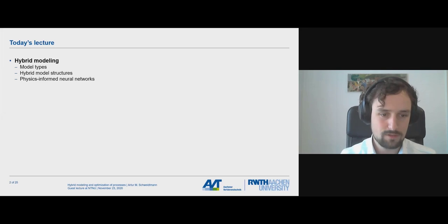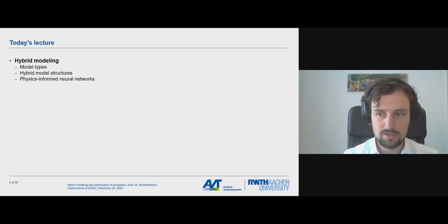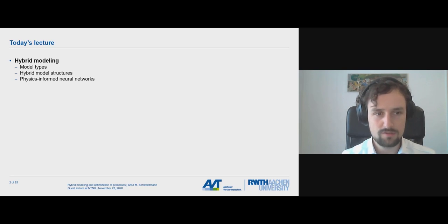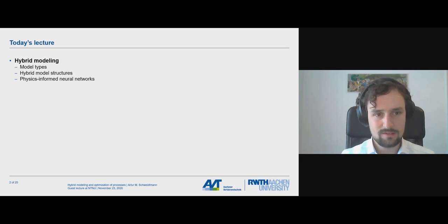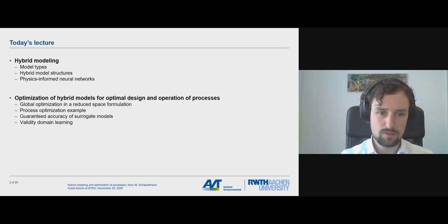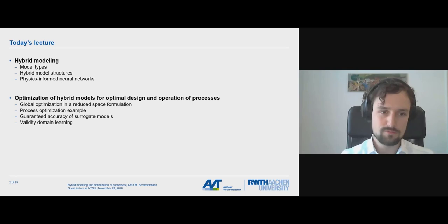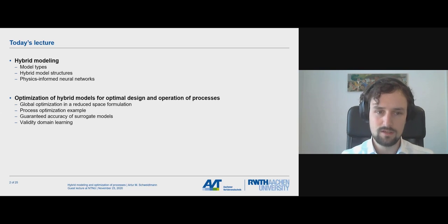My talk will have two parts. In the first part, I will talk about hybrid modeling — introducing model types, standard structures for hybrid models, and briefly introducing physics-informed neural networks. In the second part, I will focus on optimization of hybrid models, covering the need for global optimization and a formulation in reduced space. Afterwards, I'll briefly mention how you can guarantee the accuracy of surrogate models and the concept of validity domain learning for neural networks.